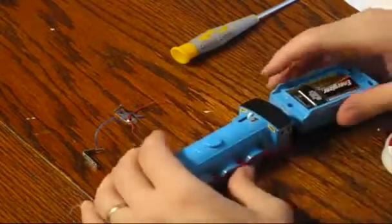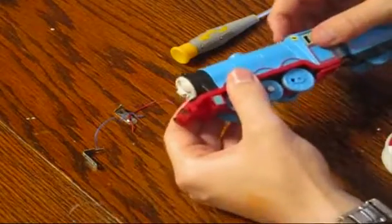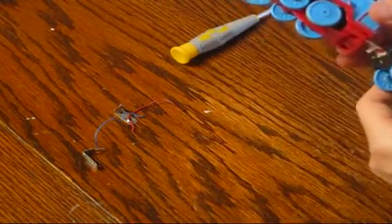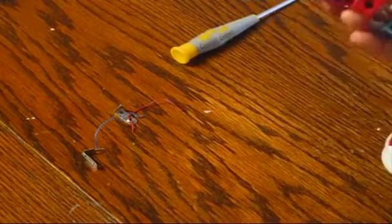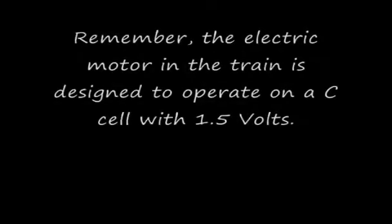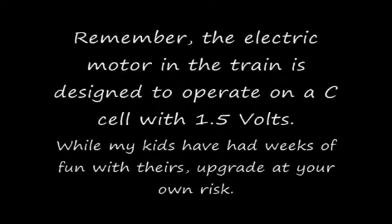And that's it. You just upgraded Gordon to carry a 9 volt battery and go really fast. Remember, the electric motor inside the train is designed to operate on a C cell with 1.5 volts. While my kids have had weeks of fun with theirs, upgrade at your own risk.